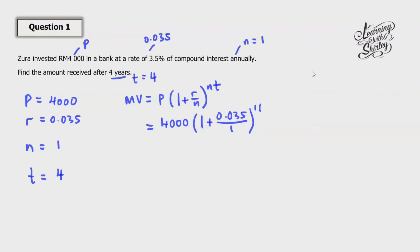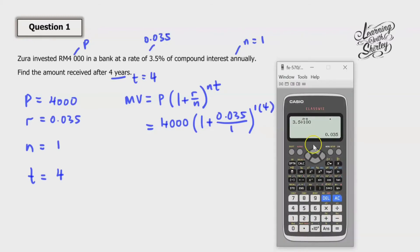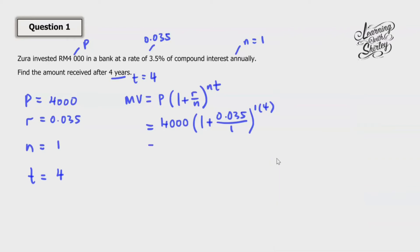Let's take out the calculator and calculate the bracket first: 1 plus 0.035, then to the power of 4, then multiply with 4000. The answer is 4590.09, and the unit is RM. That's the answer.